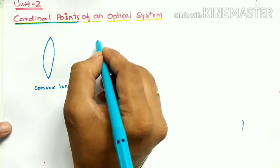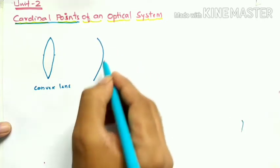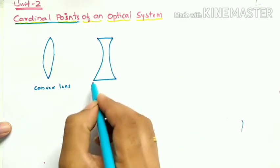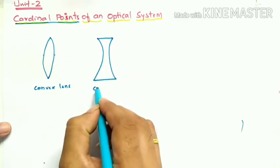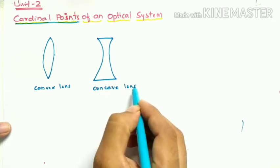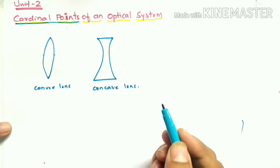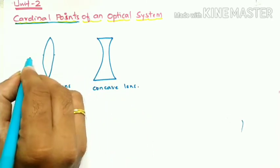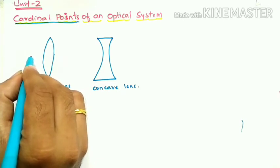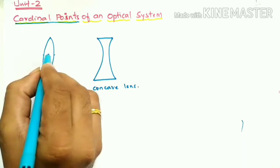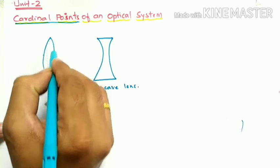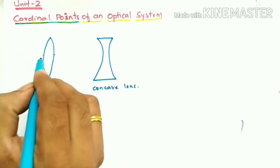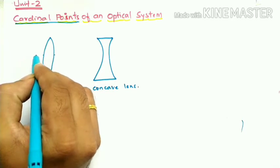Another type of lens has a thin middle and thick edges — this type of lens is called a concave lens. These two lenses have a focal length. That focal length always depends on the radius of curvature and the refractive index. The radius of curvature refers to the radius of the spherical refracting surface, and the focal length depends on both the radius of curvature and the refractive index.